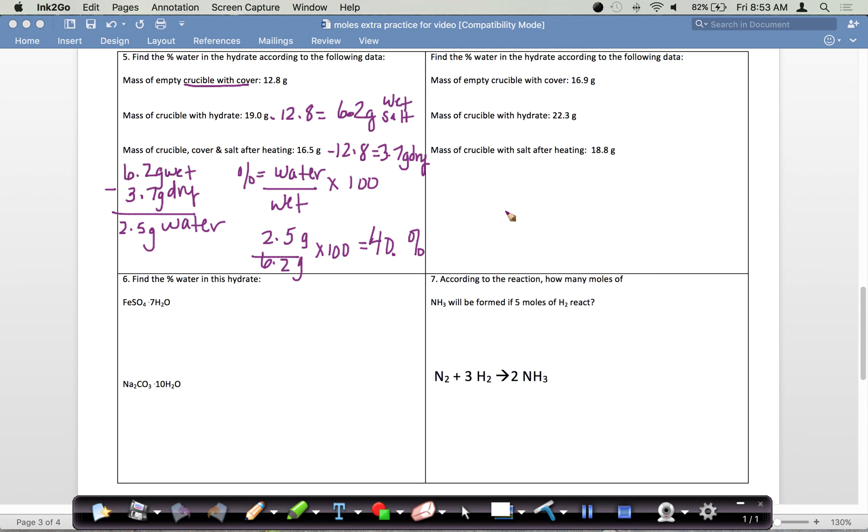If instead we're doing percent by mass of water in a hydrate from the formula, we're going to find the gram formula mass. In this case, we do Fe times 1, S times 1, O times 4, and we keep the water together and do H2O times 7. Remember that H2O has a mass of 18.0 grams for one mole. For iron rounded to the nearest tenth, we get 55.8. For sulfur, 32.1. Oxygen times 4 is 64, and 18 times 7 gives us 126.0.